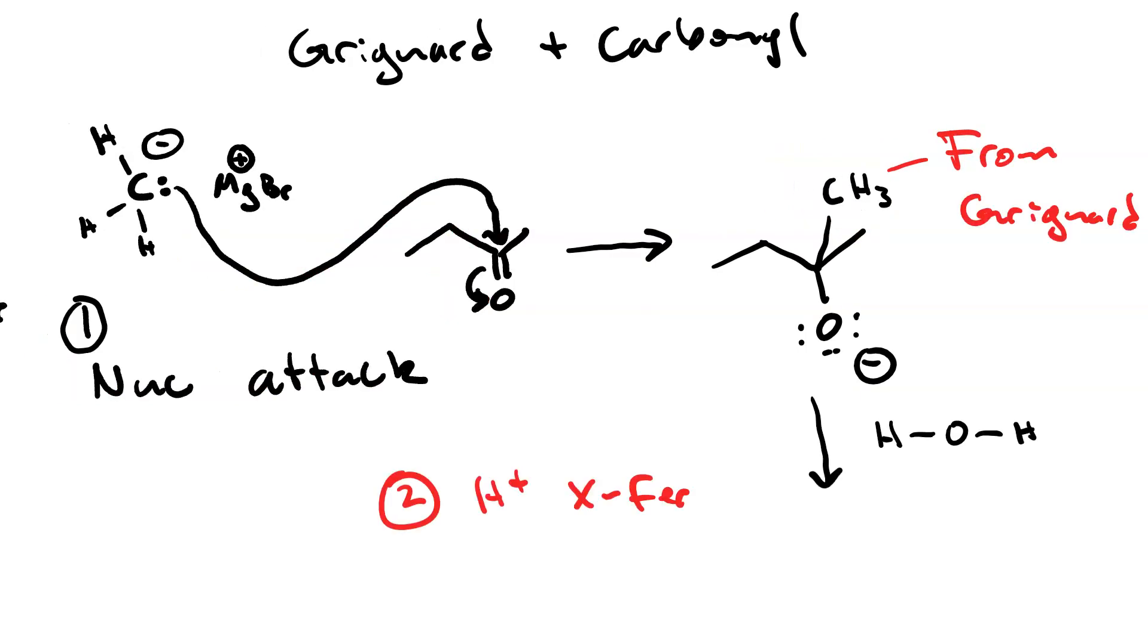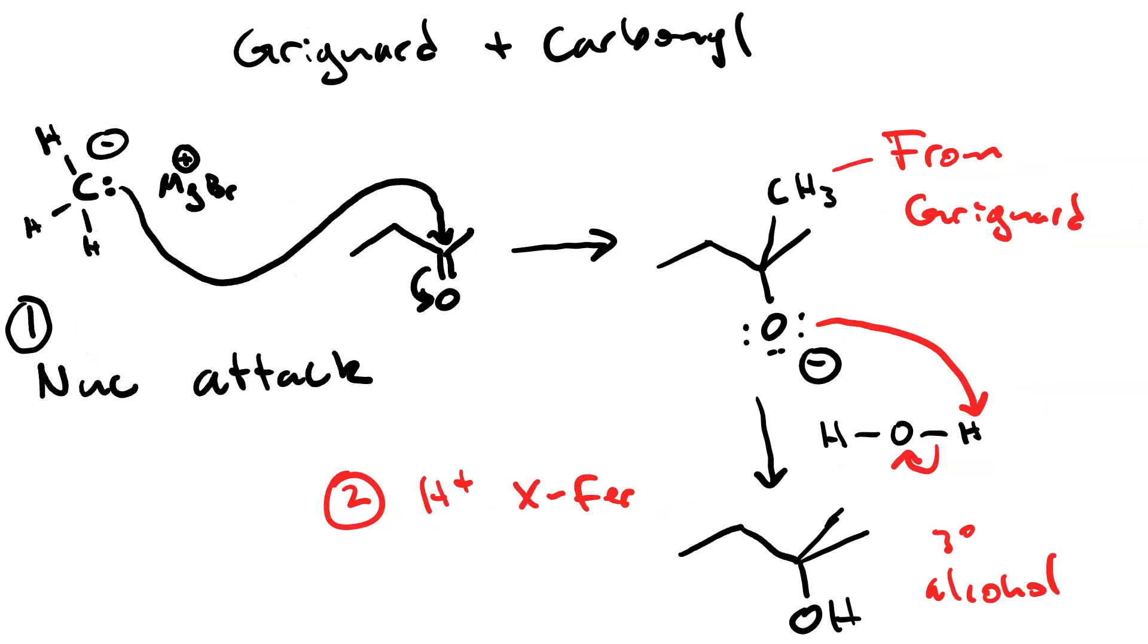This tertiary alkoxide produced by the nucleophilic attack is a very strong base, and so any weak acid like water or an alcohol in the second step will supply a proton and protonate that. Here's our proton transfer step. This is so cool because we have managed to increase both the carbon-carbon skeleton and our degree of substitution. That makes Grignard Reagents the coolest thing we've learned all semester, in my opinion.